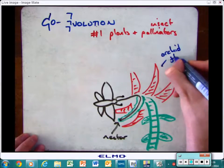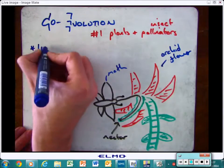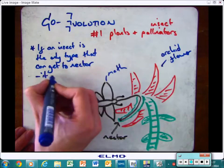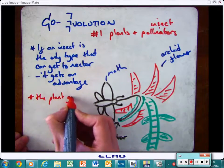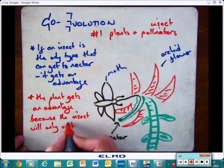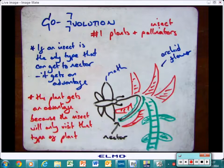And the advantage for the plant would be if only one insect was pollinating it, then it would be guaranteed that insect would go to it or another plant of its type. So the orchid then has evolved a really really deep nectar store which means that only a certain type of moth with a really really long mouth part can reach it to get to the nectar.